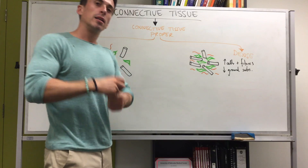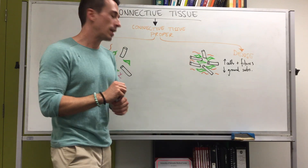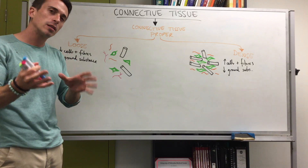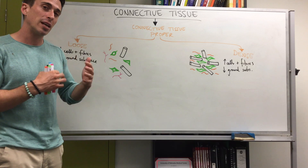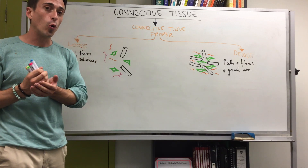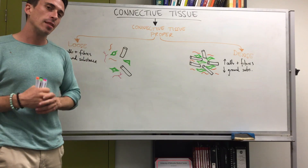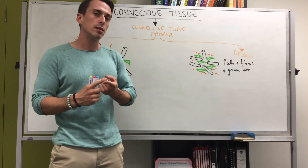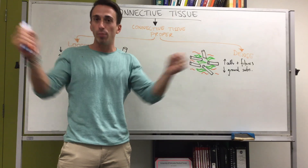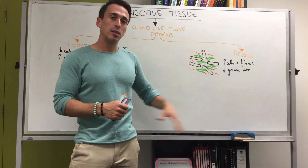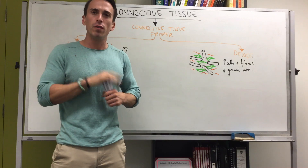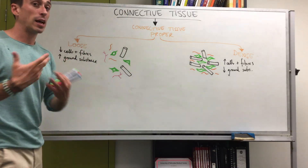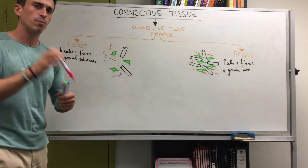Generally speaking, loose connective tissue is the type you find underneath your skin in the subcutaneous area, or surrounding your organs for protection and binding them together. Dense connective tissue makes up tendons and ligaments — tendons hold muscles to bones and ligaments hold bones to bones — and also very stretchy structures such as the aorta. Let's first focus on loose, which has further subcategories.